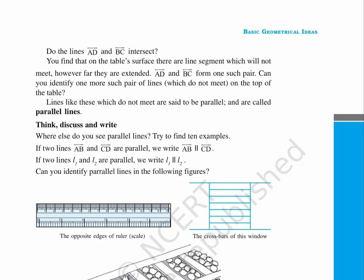Can you identify one more such pair of lines, which do not meet, on the top of the table? Lines like these which do not meet are said to be parallel and are called parallel lines.